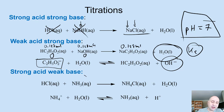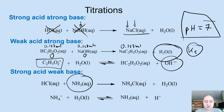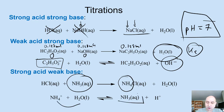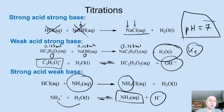The same is true for a strong acid/weak base titration. We have a weak base, and the resulting salt from the neutralization reaction — for example, ammonium chloride — produces a conjugate acid that reacts with water to form ammonia and hydronium ions. So the pH at the endpoint of a strong acid/weak base titration is going to be smaller than 7.